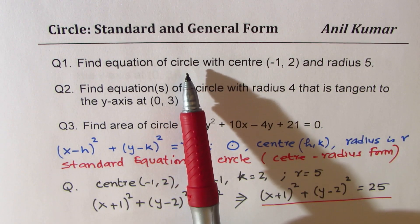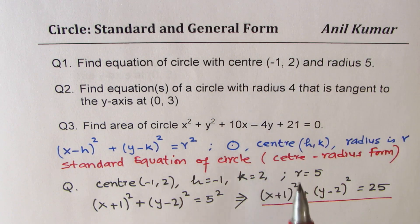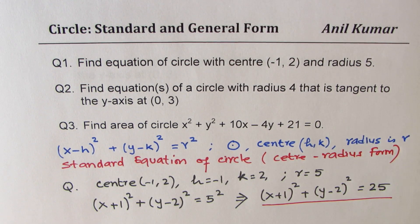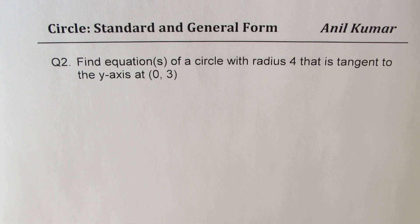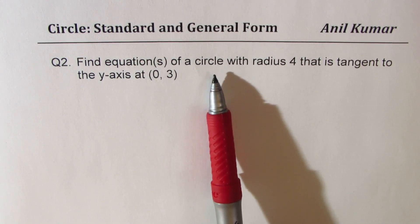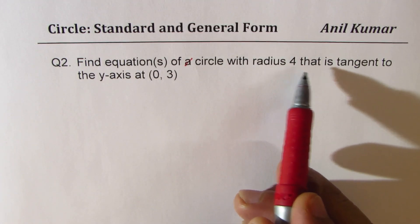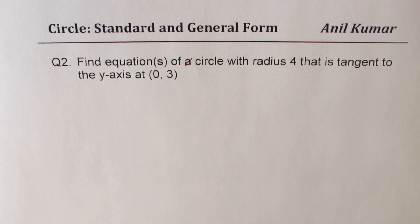A circle is the set of points at the same distance from the center, so this is a reminder of the distance formula — the equation has a direct relation with the distance formula. Now let us see how to solve question number two: find the equation of a circle with radius 4 that is tangent to the y-axis at (0, 3). Let's try to understand the question.